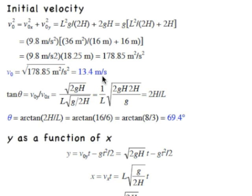Then to find the angle, the tangent of the angle of the velocity is going to be the y component divided by the x component. So that's what we've done here, v naught y over v naught x. Square root of 2gh over L times the square root of g over 2h. This simplifies into 2h over L.